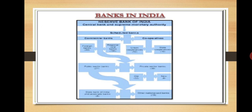In this picture we can see clearly the structure of banks in India. The Reserve Bank of India is the central bank and supreme monetary authority of India. Under RBI, scheduled banks include commercial banks and cooperative banks. Under commercial banks: 40 foreign banks, 196 regional rural banks, public sector banks including State Bank of India and its associates and other nationalized banks, and private sector banks (30). Under cooperative banks: 52 urban cooperatives and 50 state cooperatives.